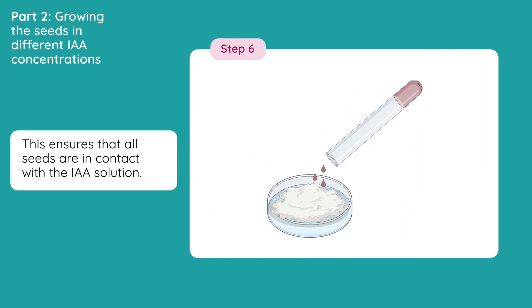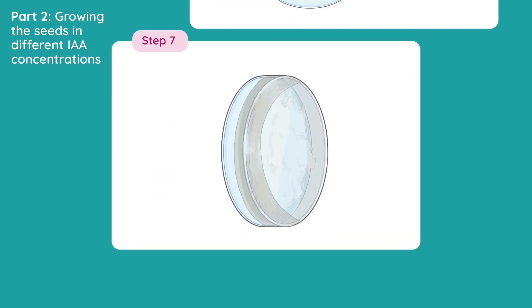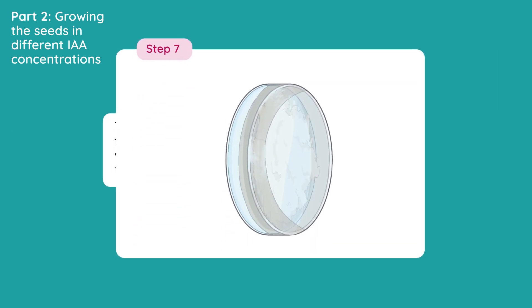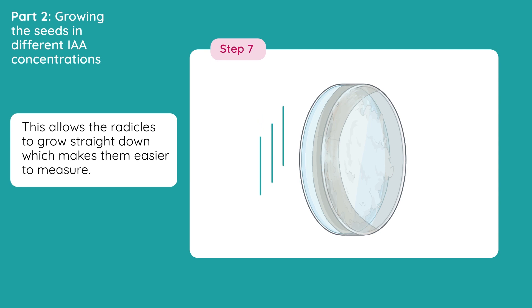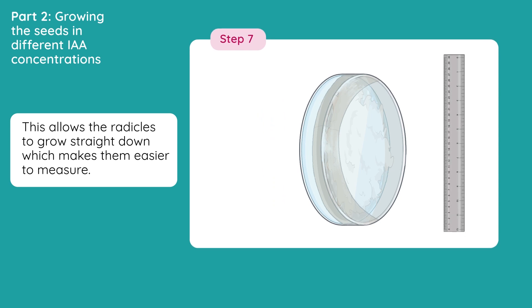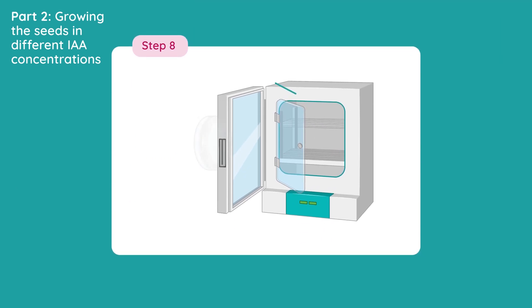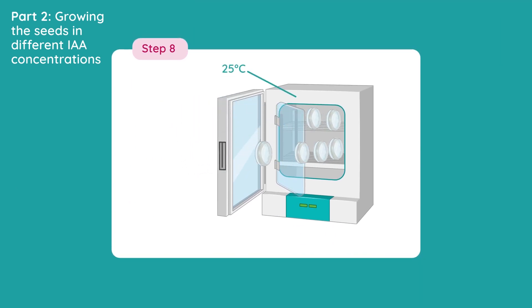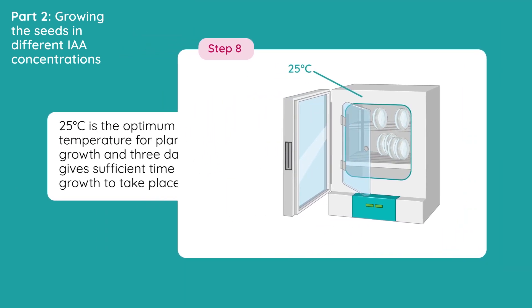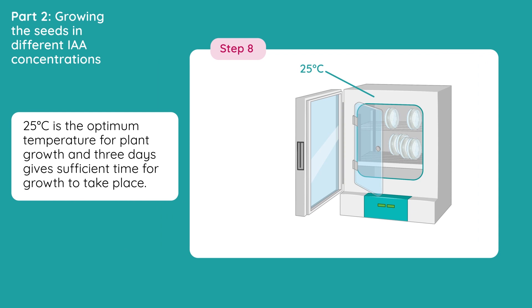Seal each dish with tape, and leave them on their sides. This allows the radicals to grow straight down, which makes them easier to measure. Place the dishes in an incubator of 25 degrees Celsius for 3 days. 25 degrees Celsius is the optimum temperature for plant growth, and 3 days gives sufficient time for growth to take place.